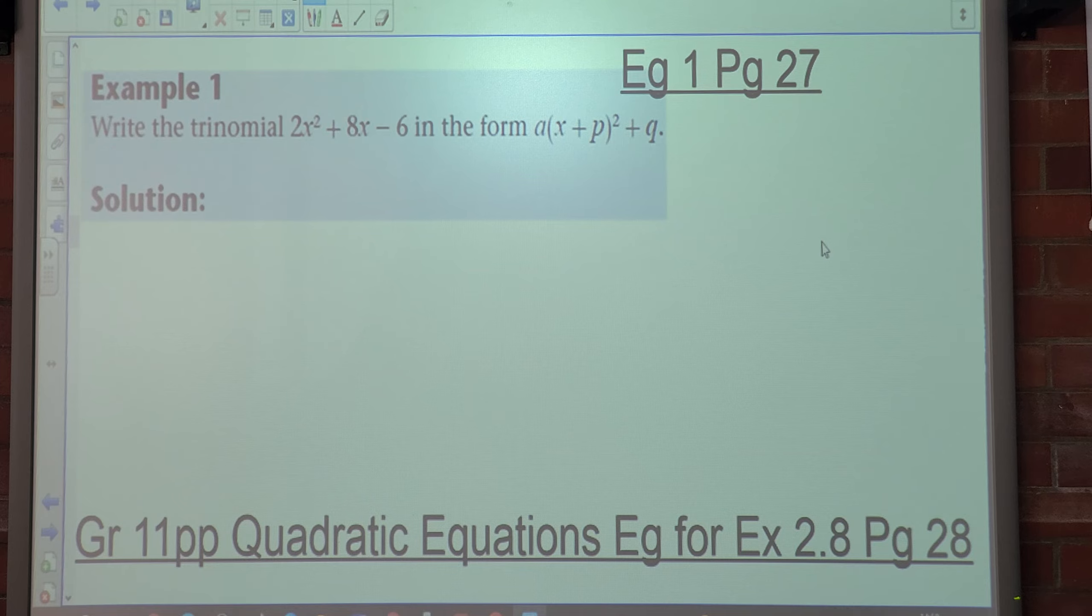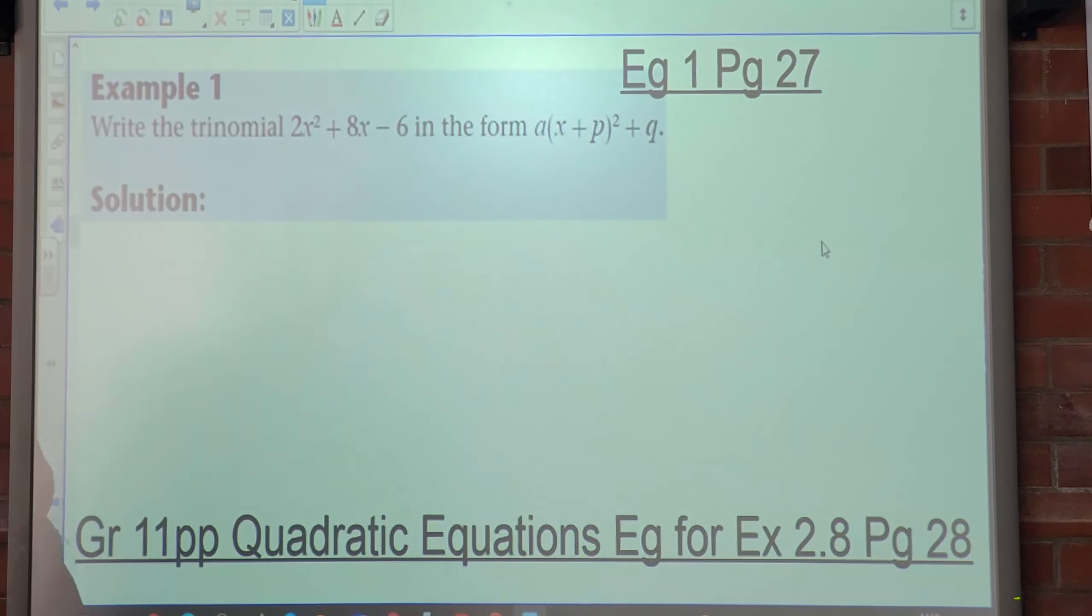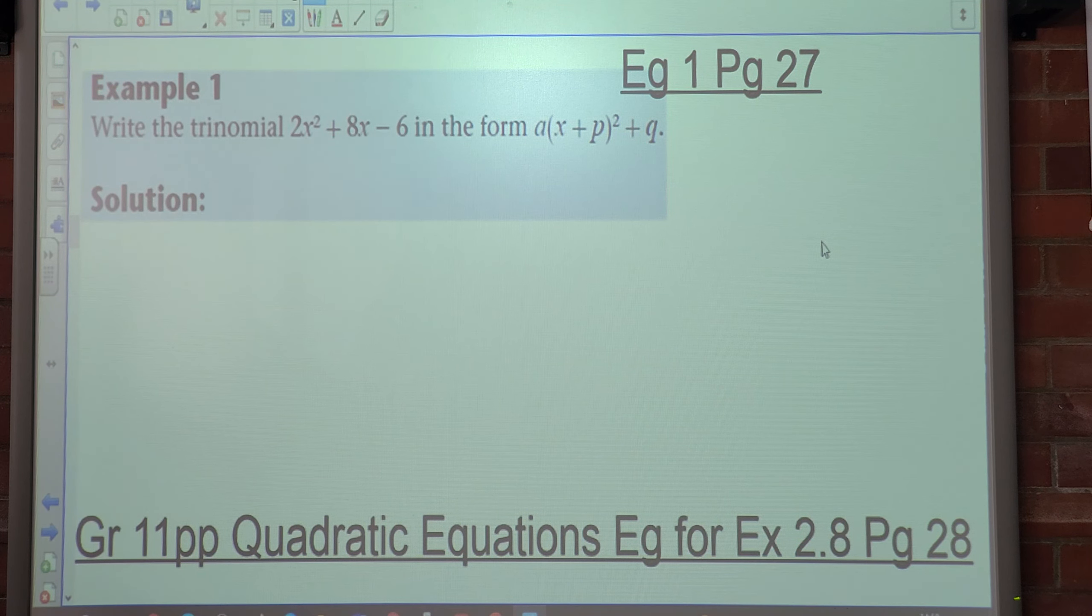So here we are told to write the trinomial 2x² + 8x - 6 in the form a(x + p)² + q. People, what's the difference with this form compared to the previous exercise? There's a coefficient. A coefficient of 2.